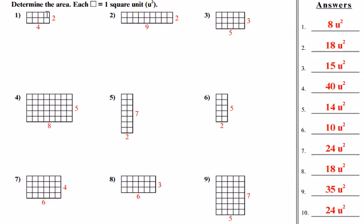And then you're going to count one, two. So you're going to write a two here off to the side. Then you're going to multiply the numbers. Four times two equals eight. So in your answer column for number one, you're going to write eight square units, which will be eight U squared. So that is how your answer will look.